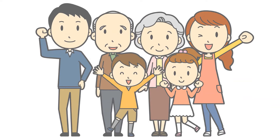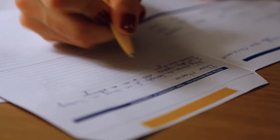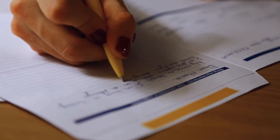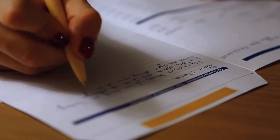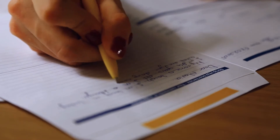In joint tenancy, it is assumed that the joint tenants have equal shares in the property. For example, if grandparents and adult children own a property in joint tenancy, it is assumed that each person will have 25% shares. In the event one of the joint tenants passes away, his shares will be distributed equally amongst the remaining joint tenants, so each surviving joint tenant will now own 33.3% shares. The rights of survivorship override any will. If you own a property in joint tenancy, this property will be excluded from your personal assets and you cannot will it to someone else. In joint tenancy, the last surviving owner will take all.